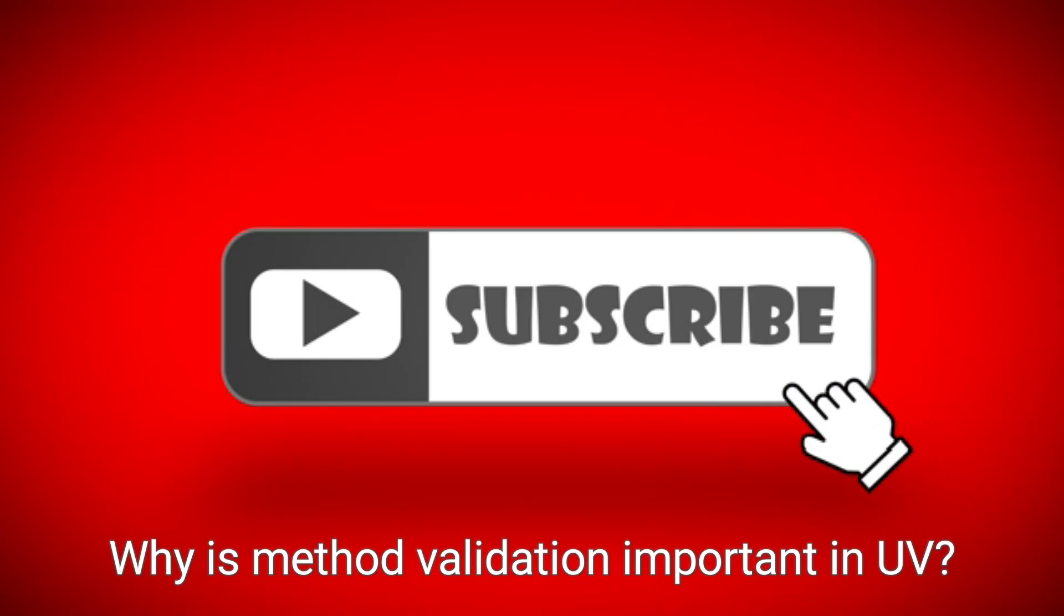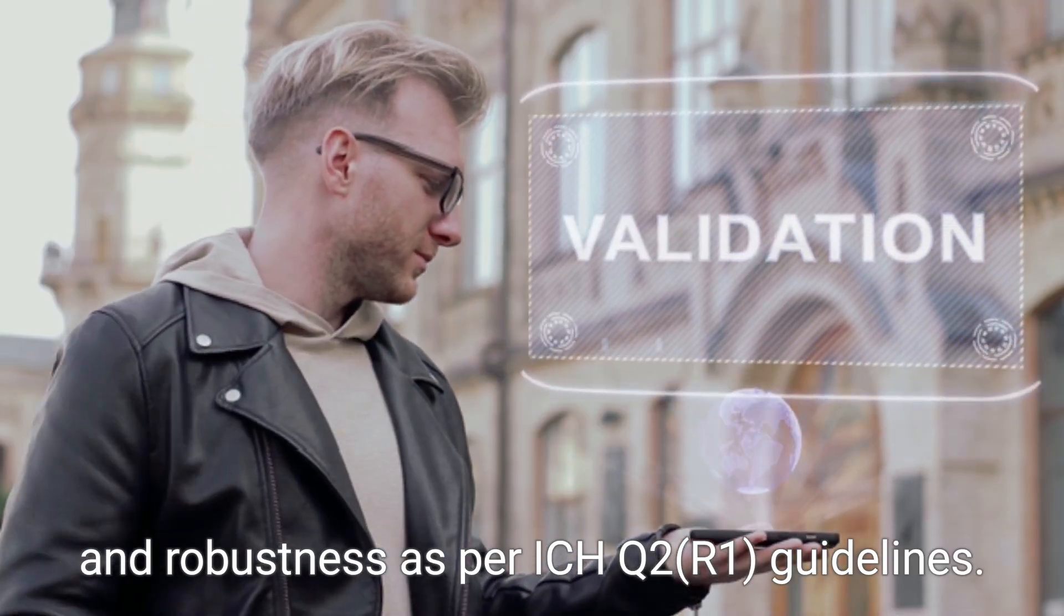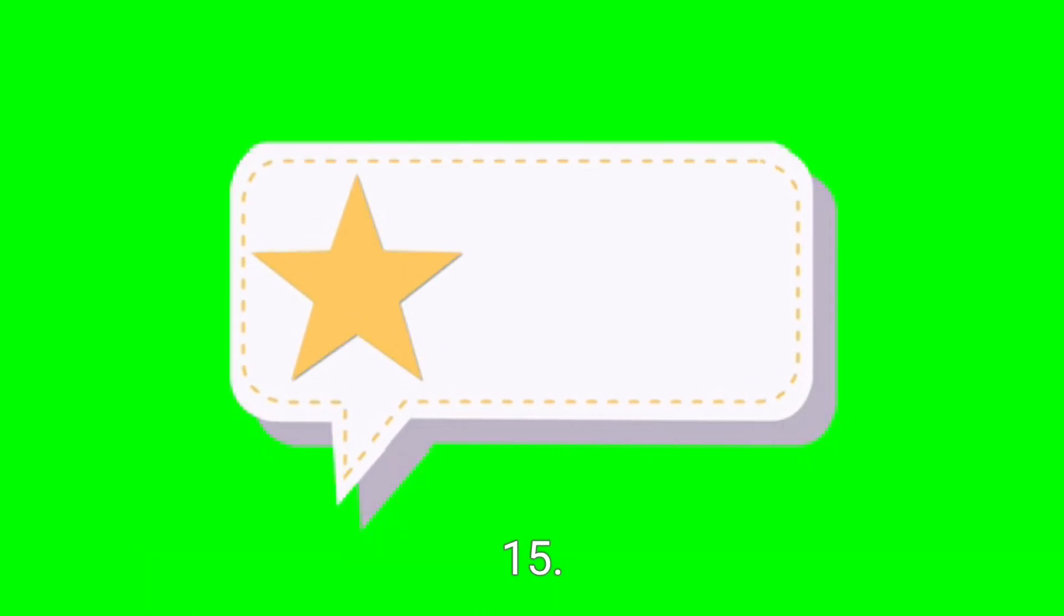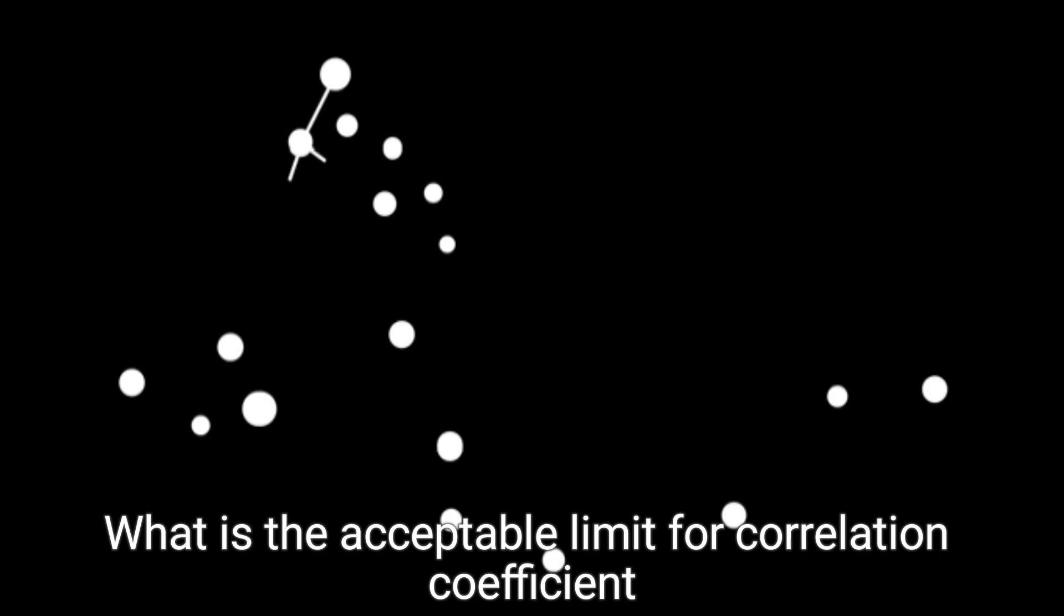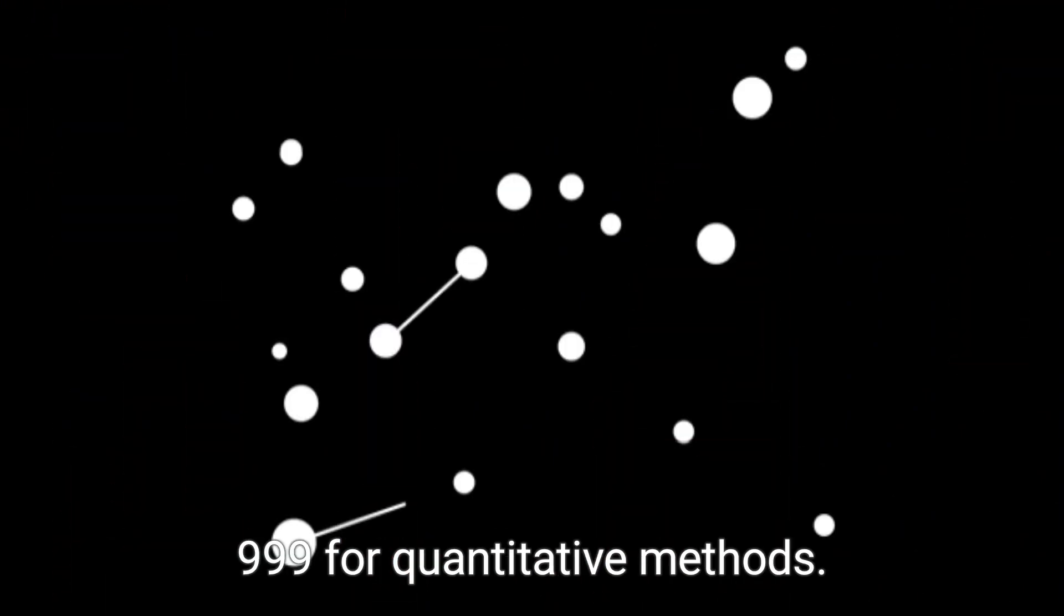Why is method validation important in UV? To ensure accuracy, precision, linearity, specificity, and robustness as per ICH Q2 R1 guidelines. What is the acceptable limit for correlation coefficient R squared in linearity? Not less than 0.999 for quantitative methods.